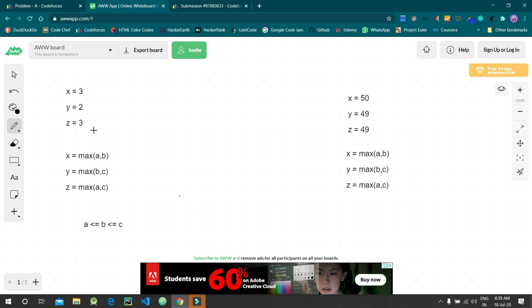As given in the problem, x equals max of (a, b), and these three conditions are given. Let's assume they are given in sorted order. If not, then assume that a is less than or equal to b, b is less than or equal to c. So the maximum value here is c.